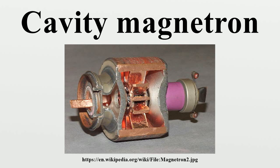Neither of these present a problem for continuous wave radars, nor for microwave ovens. All cavity magnetrons consist of a heated cathode placed at a high negative potential created by a high voltage direct current power supply. The cathode is placed in the center of an evacuated, lobed, circular chamber. A magnetic field parallel to the filament is imposed by a permanent magnet.